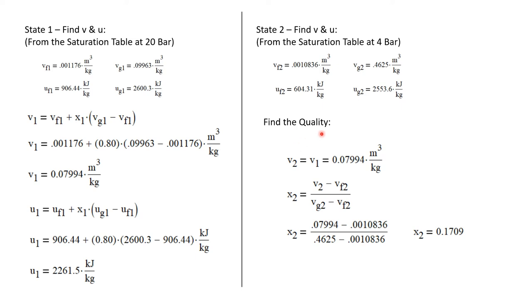We now can find the quality at state 2. We know the specific volume at state 2 is the same as state 1. And it was calculated to be 0.07994 cubic meters per kilogram. Therefore, the quality at state 2 is specific volume minus v_f over v_g minus v_f. Again, all of these properties are state 2 properties. So I calculate that the quality of state 2 is 0.1709.